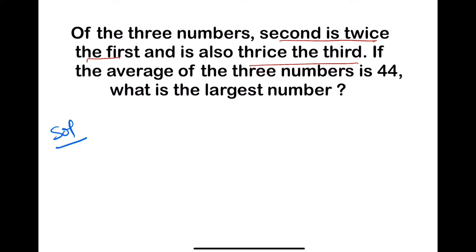Now here we have given second number is twice the first and thrice of third. So let the third number be x. When third number is x, then second number is equal to 3x because second is thrice of the third number.